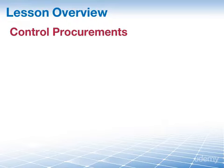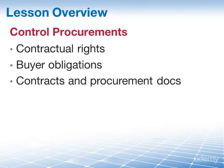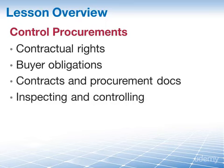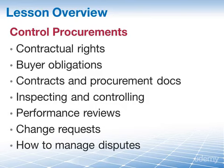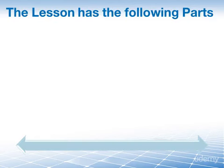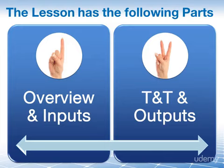In this iterative process, you want to make sure that your contractual rights are protected and that you yourself also meet your contractual obligations. In this lesson, we will focus on the contractual rights, the importance of buyers following through on their obligations, the use of contracts and procurement documents, inspecting versus controlling tools and techniques. We'll look at performance reviews, change requests, and how disputes can be managed and controlled. In part one of this lesson, we are going to provide you with an overview of the control procurements process, as well as a discussion of the inputs. In part two, we'll discuss the tools and techniques, the outputs, and we will have our usual review at the end.